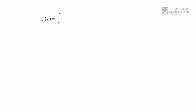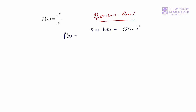Our next example uses the quotient rule. Recall f'(x) = [g'(x)·h(x) − g(x)·h'(x)] / [h(x)]².